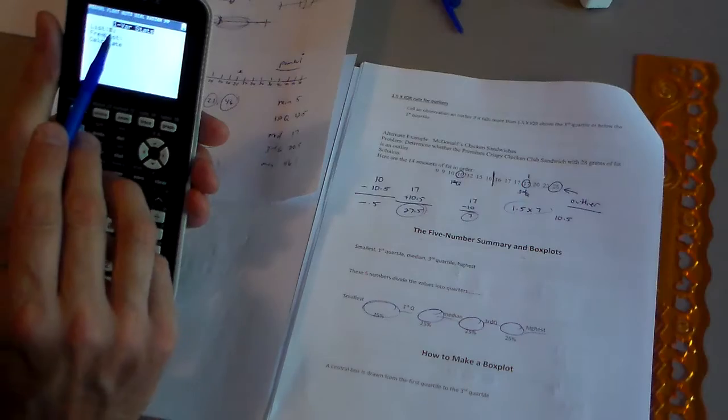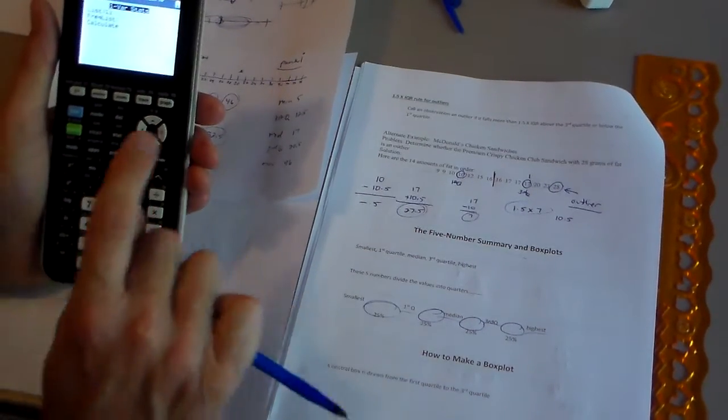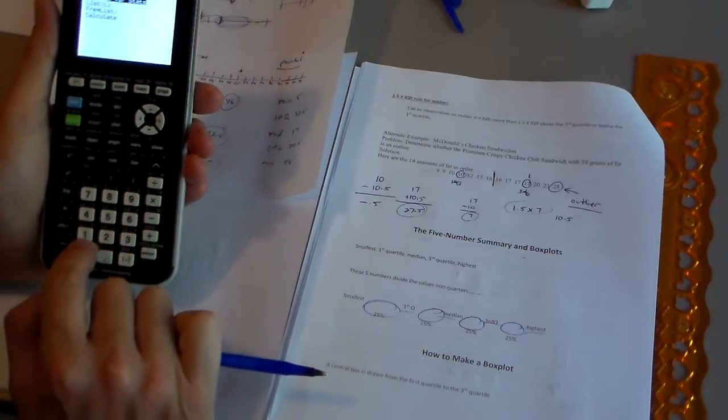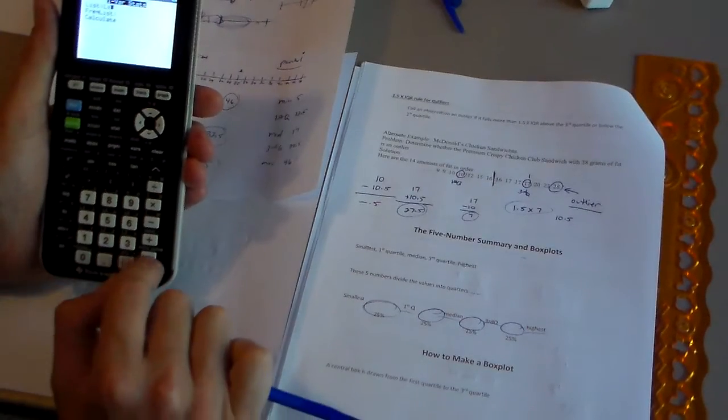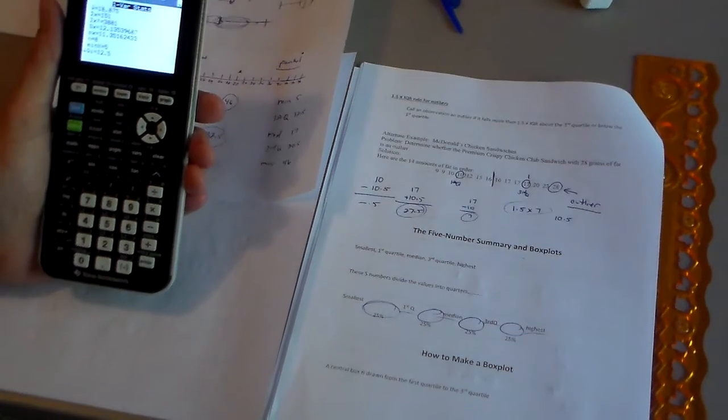And see how it says L2, but I put my data in L1. So that means I'm going to do second number one gives me L1. Enter, enter, enter, and this gives me all my statistics. Isn't that neat?